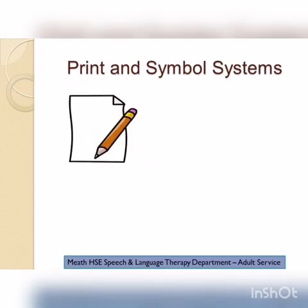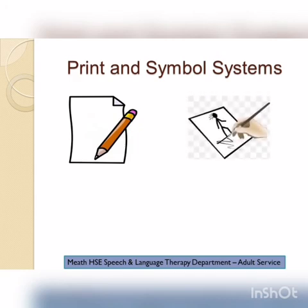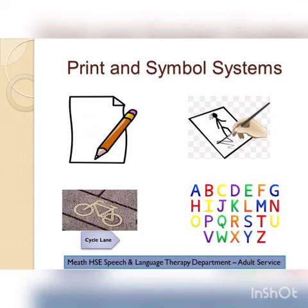Many people find it useful to write down what they are trying to say, or even to draw a picture to get their meaning across. Many people will understand the written word more easily than listening to the spoken word. Alphabet charts can also be used, where the person points to the first letter in the word they are trying to say to help the listener figure out the word, or else they may spell out full words in this way.